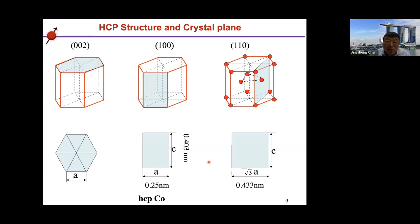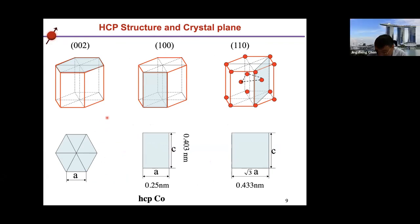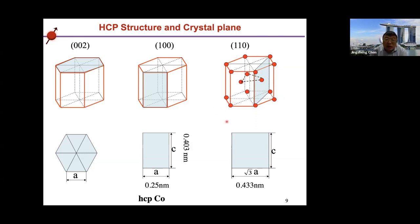Now let's look at examples of how to control epitaxy growth, using cobalt as an example. Cobalt is commonly used in magnetic recording media for longitudinal or perpendicular recording. Cobalt has an HCP phase — with four cobalt atoms at the base, one on top, and six atoms in the hexagonal arrangement. To maintain the easy axis out-of-plane, we need the 002 texture — meaning the easy axis is along [002]. So we need to find a substrate or underlayer with the appropriate HCP-like atom arrangement.